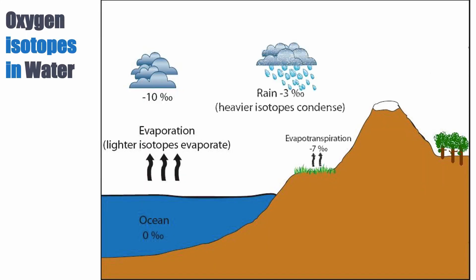The process doesn't stop there. When rain falls, it's the reverse of evaporation — it's condensation. The heavier molecules in the clouds tend to end up in the rain droplets, concentrating O18 into the rain. So the rain now has a value of minus three per mil. It's still negative compared to the ocean, but more positive than the cloud, which is more negative.